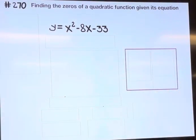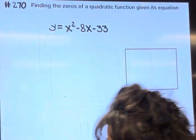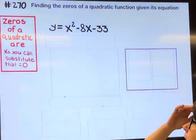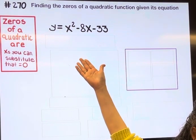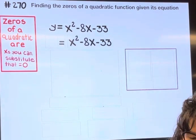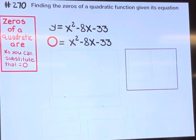We want to find the zeros of the quadratic, and if you want to find the zeros, it's really saying what number can you substitute in for x and make this equal 0. So if we're going to find the x's that make this equal 0, we want to set it equal to 0 and then solve.